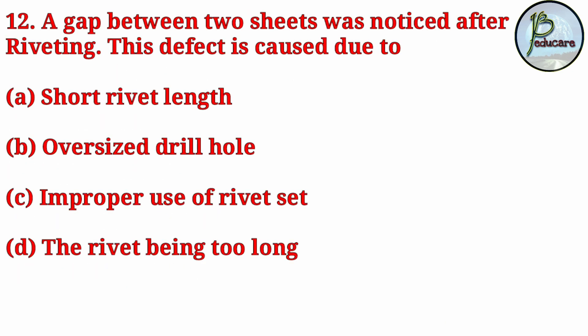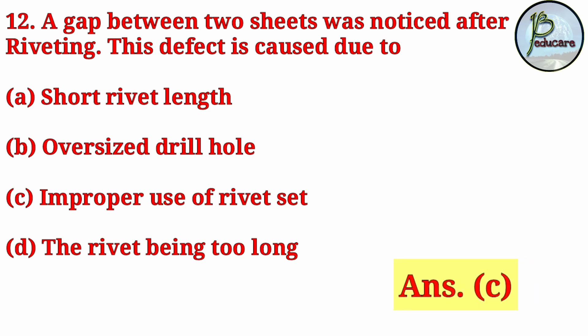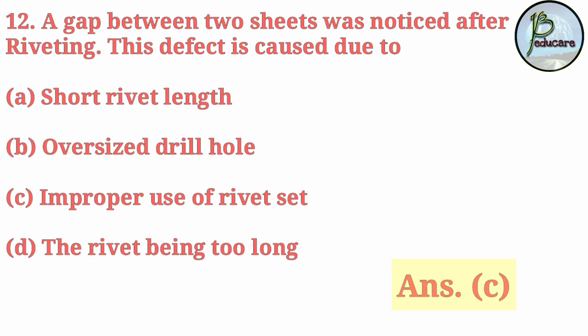Next question: a gap between two sheets was noticed after riveting. This defect is caused due to? The correct answer is option C: improper use of rivet set.